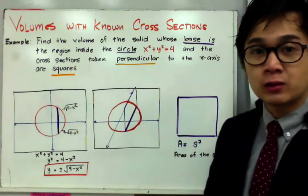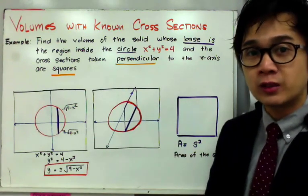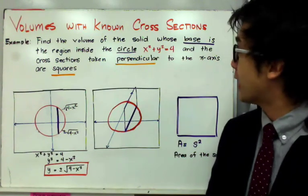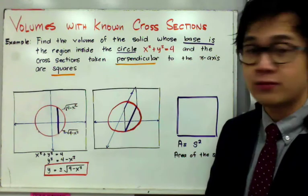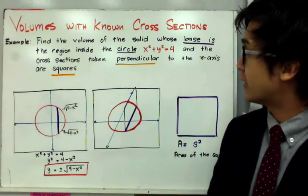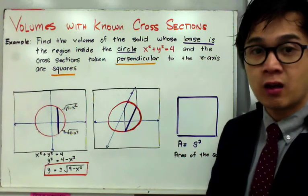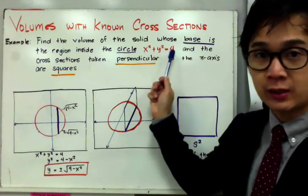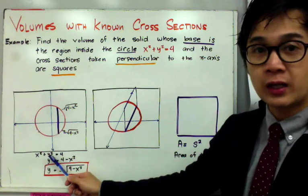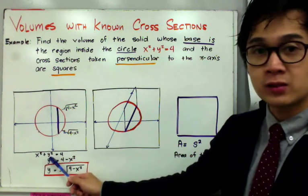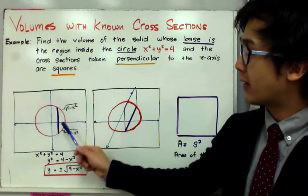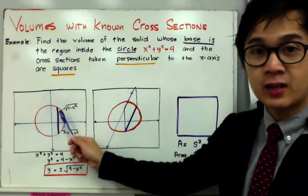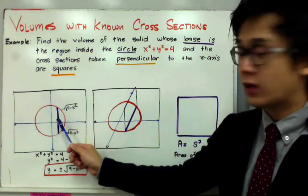The first thing you need to do is visualize what is being asked. In this particular problem, we have a circle as its base, and the cross-section of that solid is a square perpendicular along the x-axis. With the equation x² + y² = 4, this vertical line shown is the top view of your square.